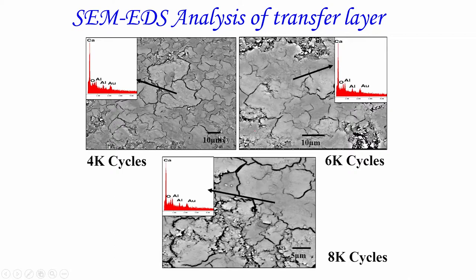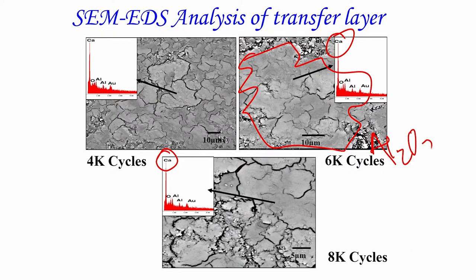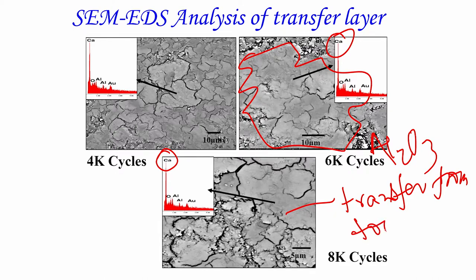Looking at the transfer layer formed on the alumina surface, there is a very strong peak of calcium. This transfer film on the flat alumina surface essentially comes from the tooth — the tooth ball is fretted or worn away and then transferred to the alumina surface, forming this transfer layer.